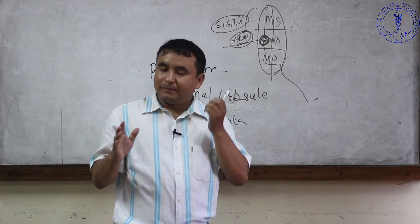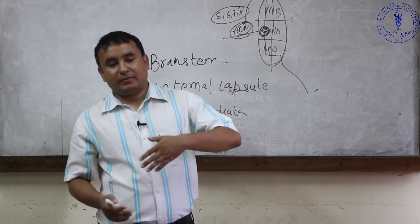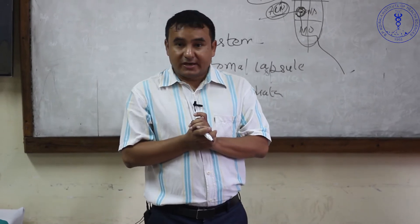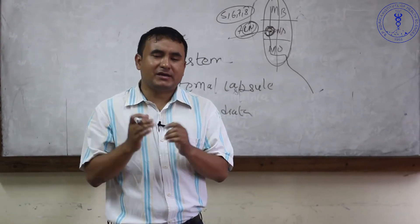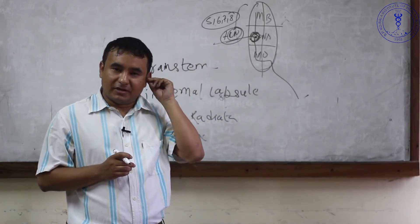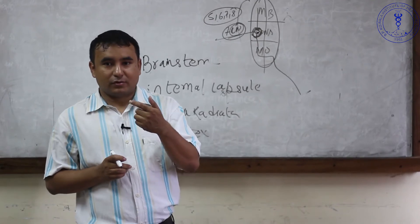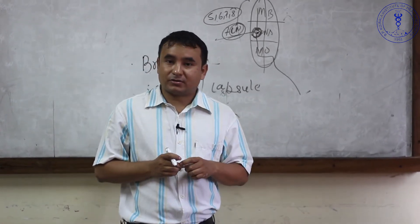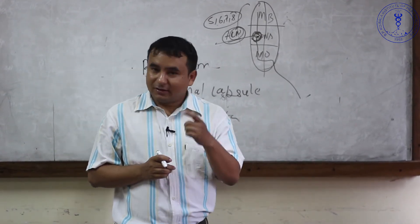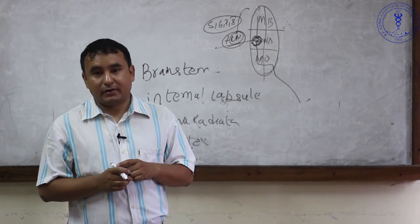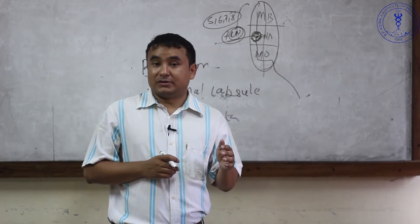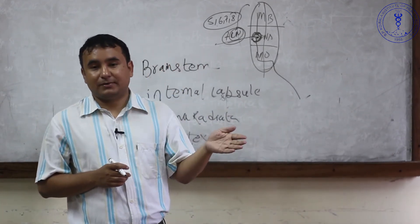This is called crossed paralysis — a problem on one side of the face and the opposite side of the body. Crossed paralysis is a classical feature of brainstem involvement. If the midbrain is involved, cranial nerves 3 and 4 arise from there, so any oculomotor or trochlear nerve problem seen in the eyes means you should think about midbrain involvement.